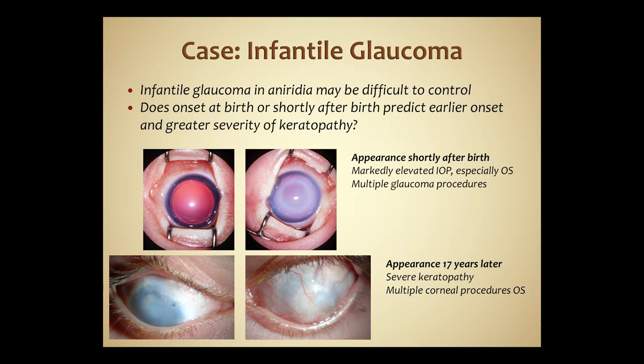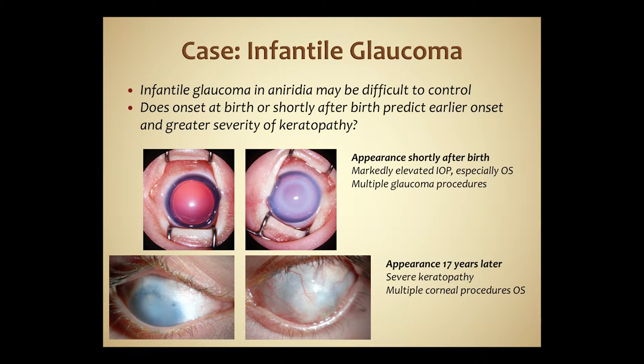This case illustrates the infantile form of glaucoma, which can be very difficult to control and manage. It has its onset shortly after birth or even at birth. I've always wondered whether this might predict an earlier onset of other problems, including aniridia keratopathy. This is one of my patients I've followed for nearly 20 years who had aniridia glaucoma shortly after birth, with markedly elevated intraocular pressure especially in the left eye, and was treated with several glaucoma procedures, ultimately controlling her pressure. But 17 years later, she had a severe keratopathy and has had multiple corneal procedures with reduced vision due to corneal problems.